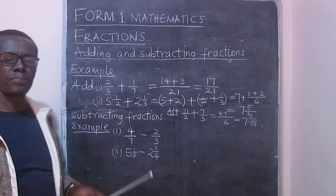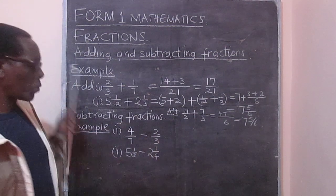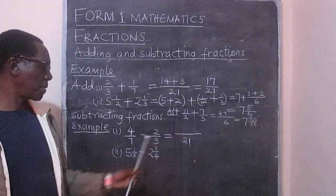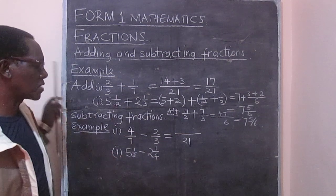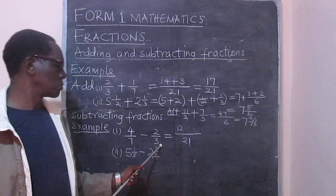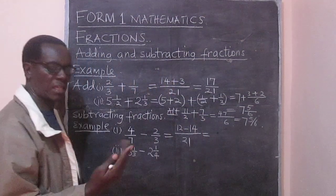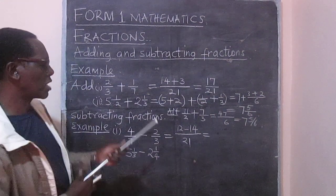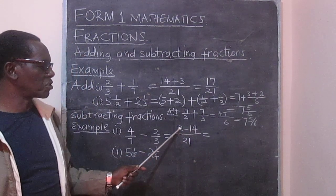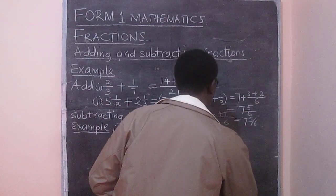We need now to look at subtraction. The procedure is basically the same because we need the LCM, which again is, for 7 and 3, again we have 21. 21 divided by 7, that's 3 times 4, that gives us 12. And then we have 21 divided by 3 is 7 times 2 is 14. And when we simplify this, this is what I was saying at the beginning, we need to remember how we were doing the integers. Because here you see we got 12 subtract 14. Now you remember how we were doing it. We were saying 14 subtract 12, that gives us 2, and give the sign of the larger number. So we get negative 2 divided by 21.